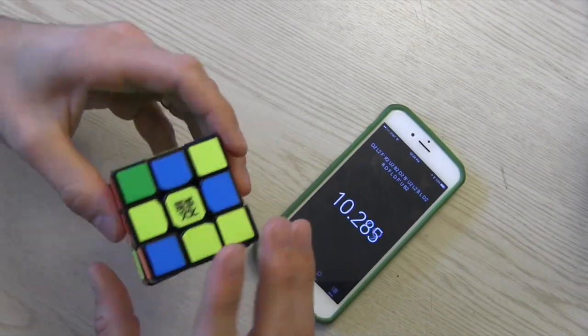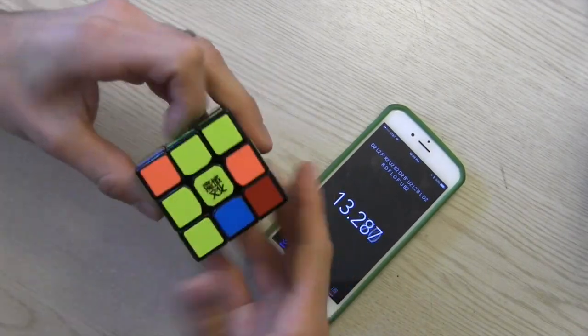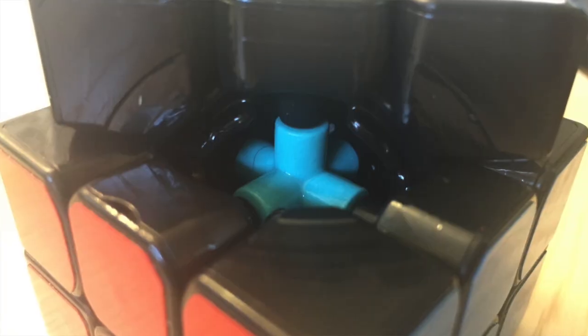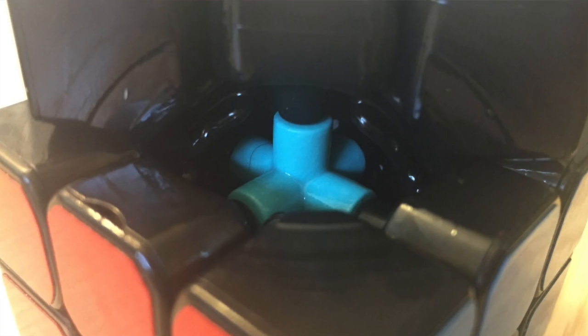If I really had to break it down in comparison between cubes, I would say that it has a controllability of the Yu Ying with the speed of the Mei Ying. This sits in between making it a decent cube for someone who wants a fast cube, but one that's a bit easier to control.